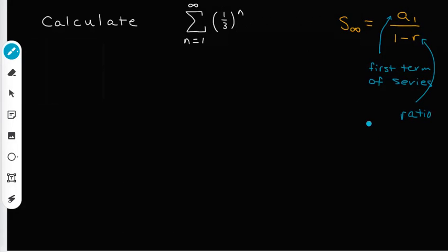Now, whenever you're given a ratio, you need to make sure that the absolute value of R, whatever number it is, is less than 1. That way, you get a series that converges instead of diverging.